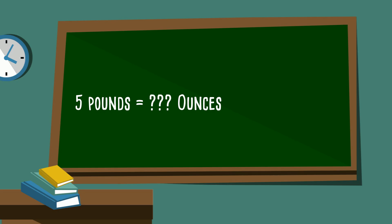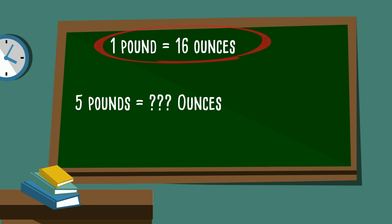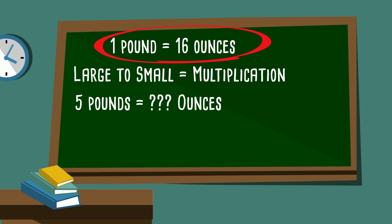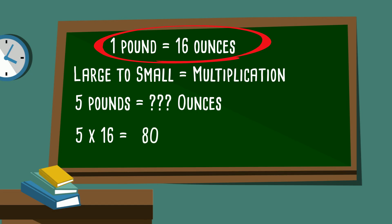How about this one: 5 pounds equals how many ounces? Our hint is one pound equals 16 ounces. We know that pounds are larger than ounces, so we're moving from large to small — we multiply. 5 times 16 equals 80, so 5 pounds is equal to 80 ounces.